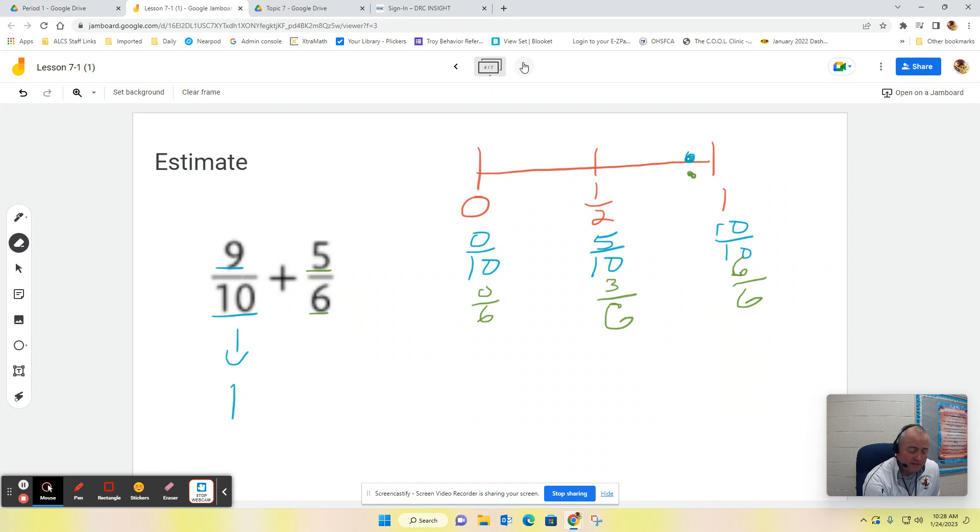Okay, it's almost 6/6. So that is also going to estimate down to one, and then obviously, one plus one is two. So 9/10 plus 5/6 is about two.